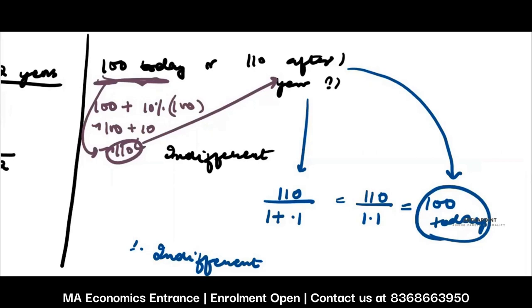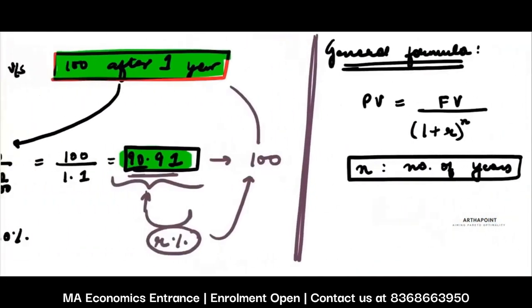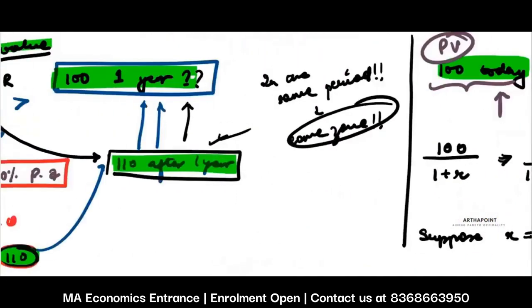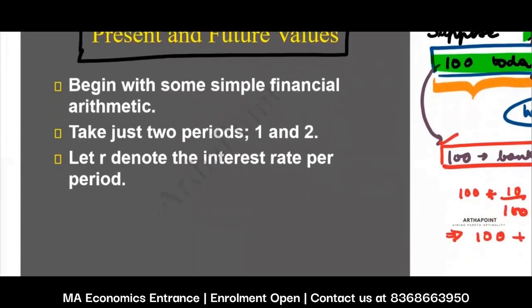Either you can bring all the stream of payments to the future value and compare, or you can find everything in present value terms. But you have to be consistent — you just have to follow one technique. You cannot follow both. Now let's see what is happening with two periods.